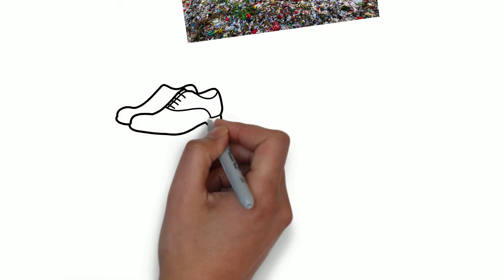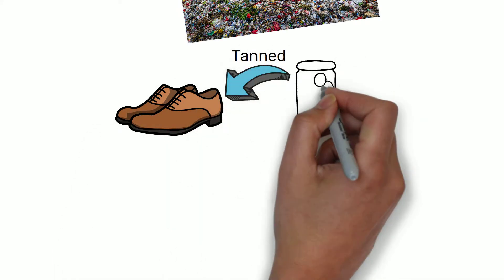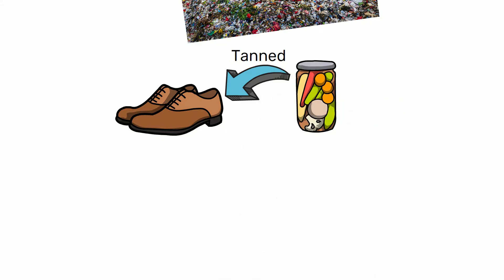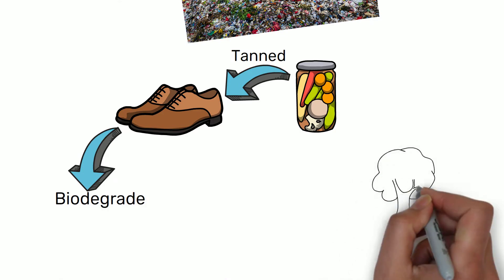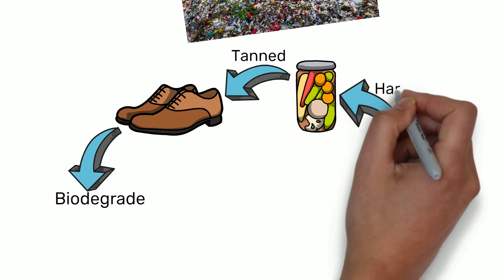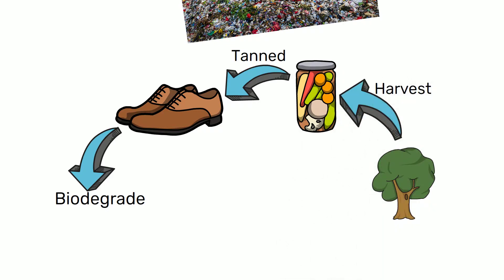One example of monstrous hybrid is a conventional leather shoe. At one time, shoes were tanned with vegetable chemicals, which were relatively safe. The shoes could biodegrade after its useful life or be safely burned. But vegetable tanning required that trees be harvested for their tannins. As a result, shoes took a long time to make and they were expensive.